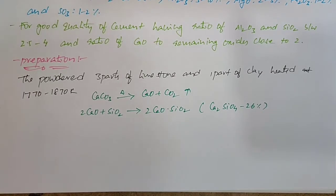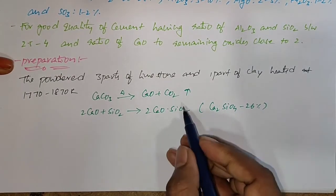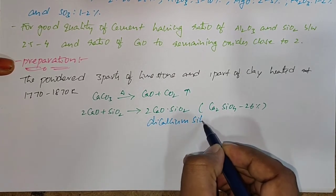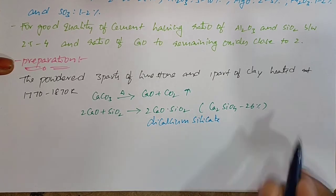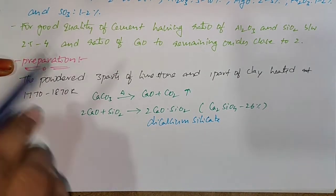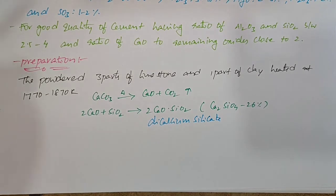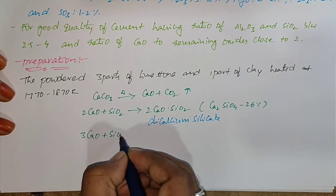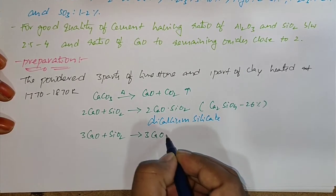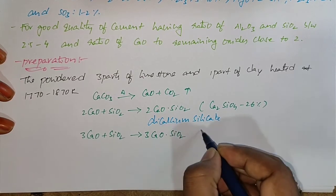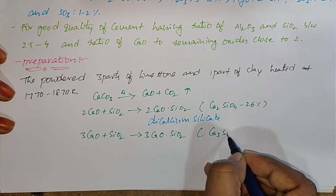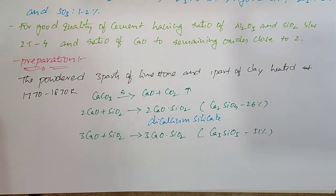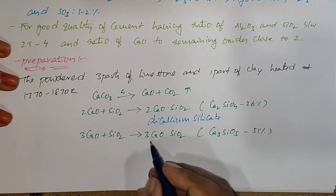Dicalcium Silicate is present at about 26%. Then, three moles of Calcium Oxide react with Silicon Dioxide to form Tricalcium Silicate, written as Ca3SiO5. Its ratio is nearly 51% and we call it Tricalcium Silicate.